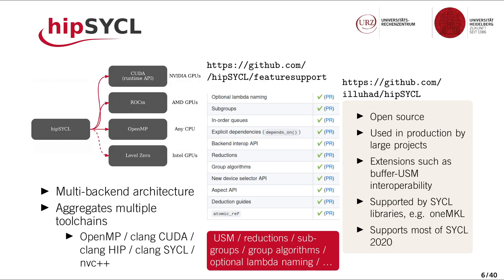So let's dive into HIP-SYCL. HIP-SYCL is a multi-backend SYCL implementation. We currently have four backends: a CUDA backend for NVIDIA GPUs, a ROCm backend for AMD GPUs, an OpenMP backend for CPUs, and a Level Zero backend for Intel GPUs. HIP-SYCL is built on the idea of aggregating multiple toolchains under a common roof, so you can use HIP-SYCL but underneath use an OpenMP toolchain, a Clang CUDA toolchain, a Clang HIP toolchain, a Clang SYCL toolchain, or even NVIDIA's NVC++ compiler.